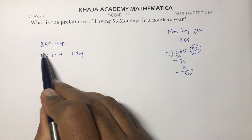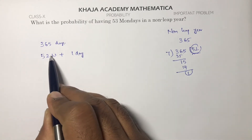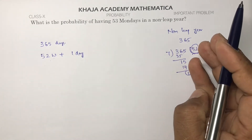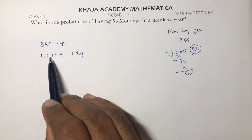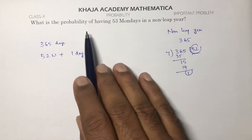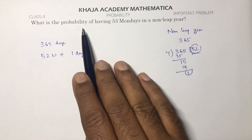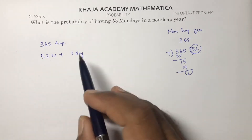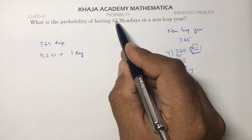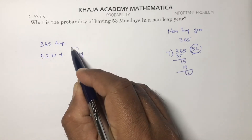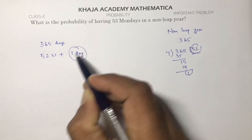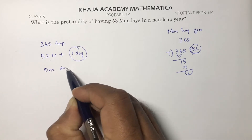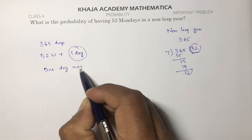With 52 weeks, every day of the week will occur exactly 52 times. But the question is what is the probability of having 53 Mondays? To get 53 Mondays, it depends on this one extra day.